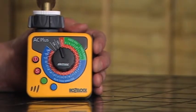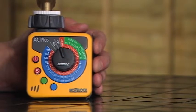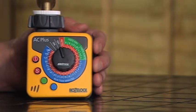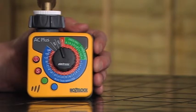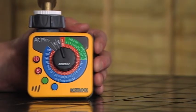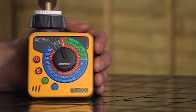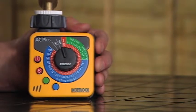So we've fitted the LR14 or size C batteries to the AC Plus and now we want to start programming it to turn our watering system on when we require. The first thing we need to decide is how many times a day we want the watering to occur.